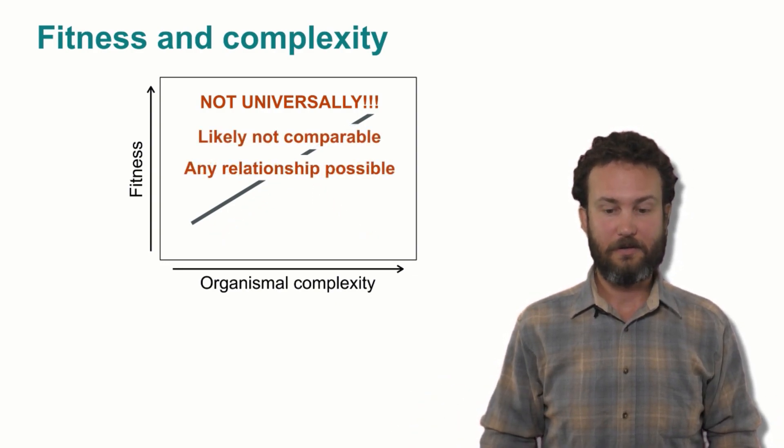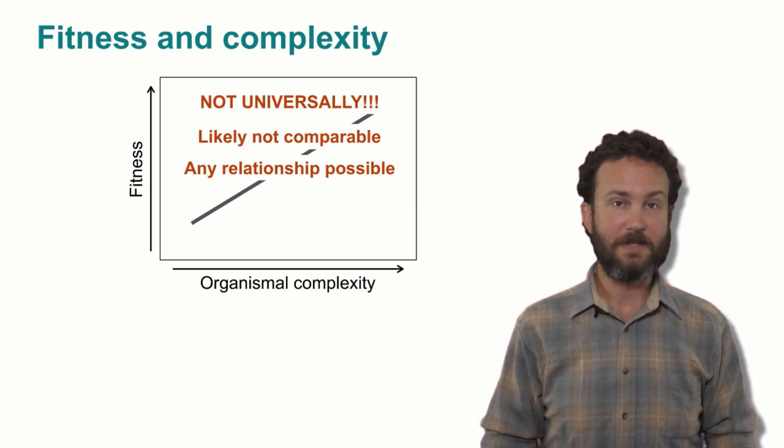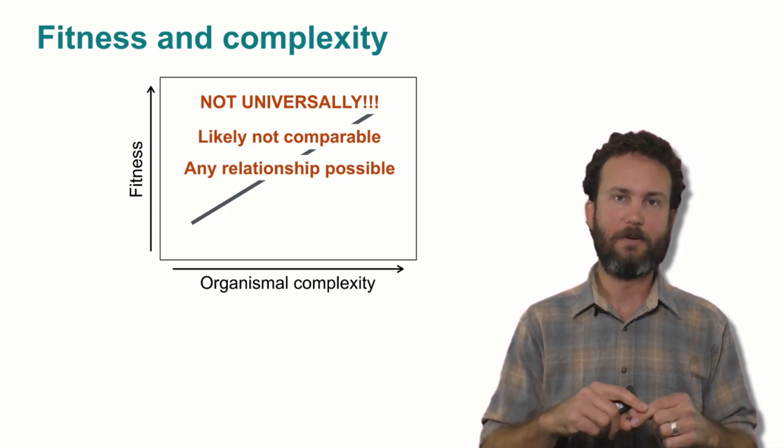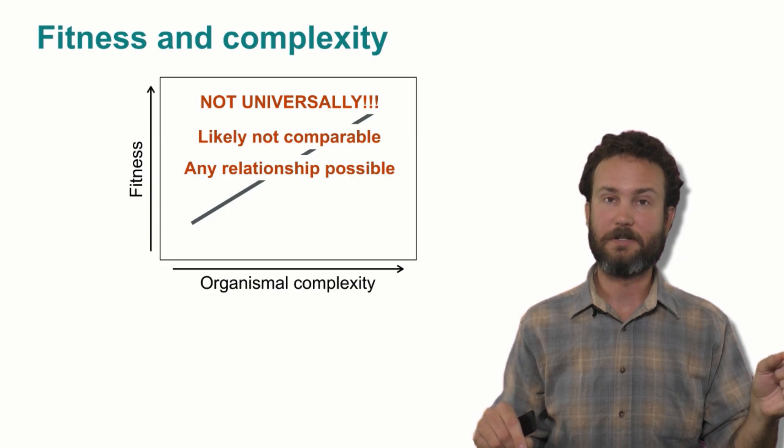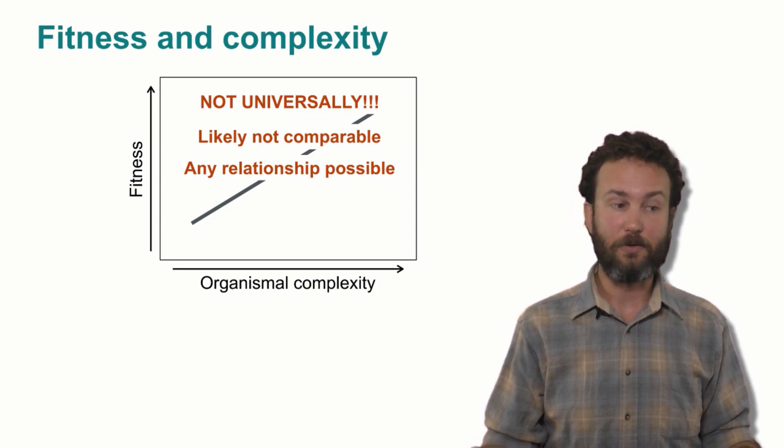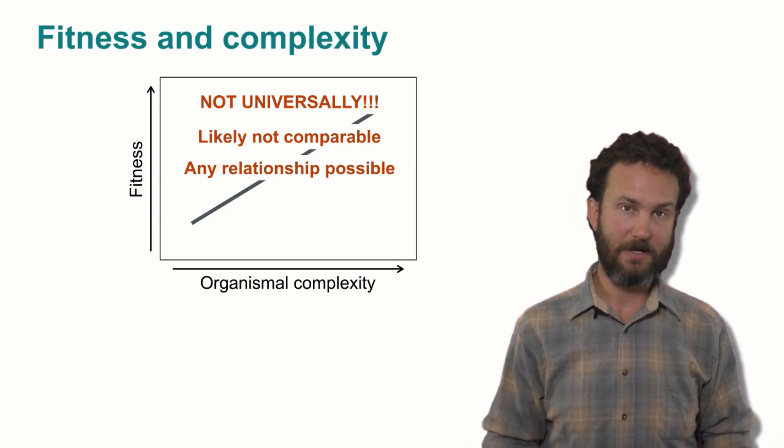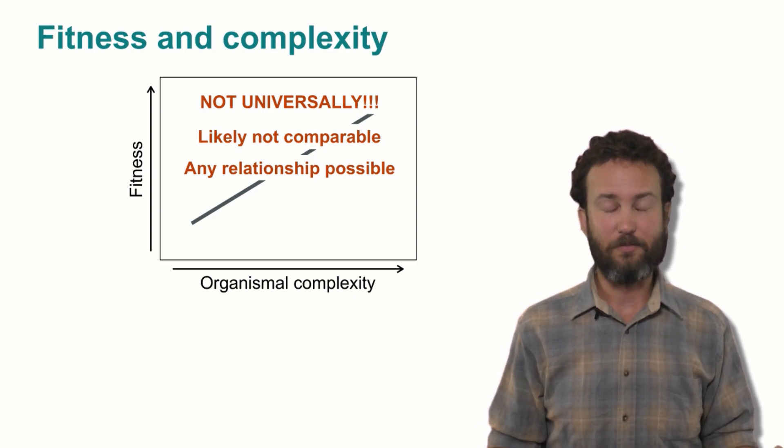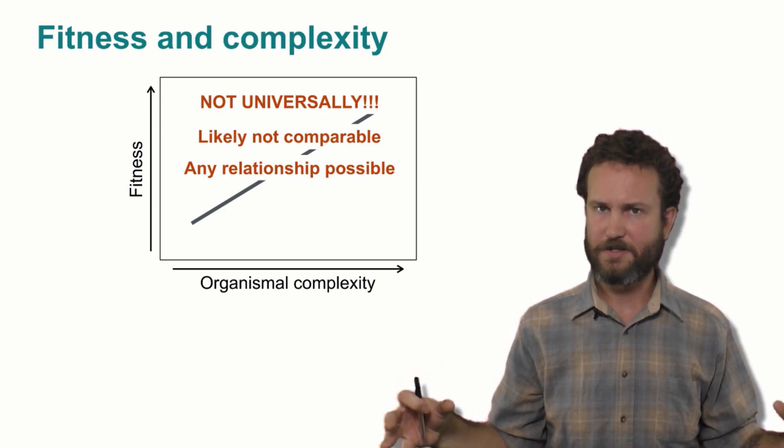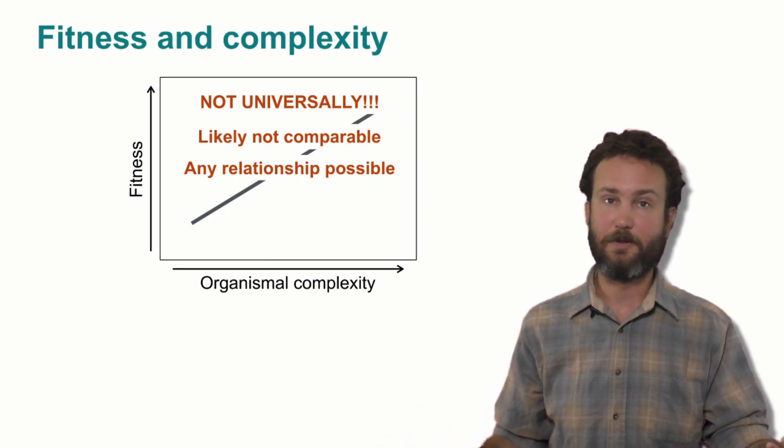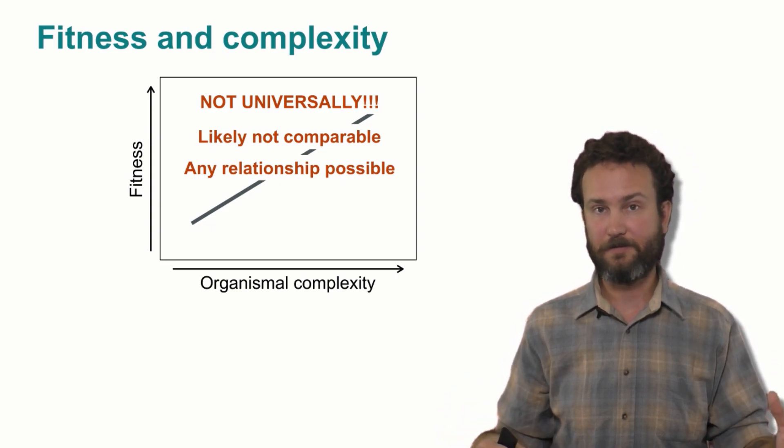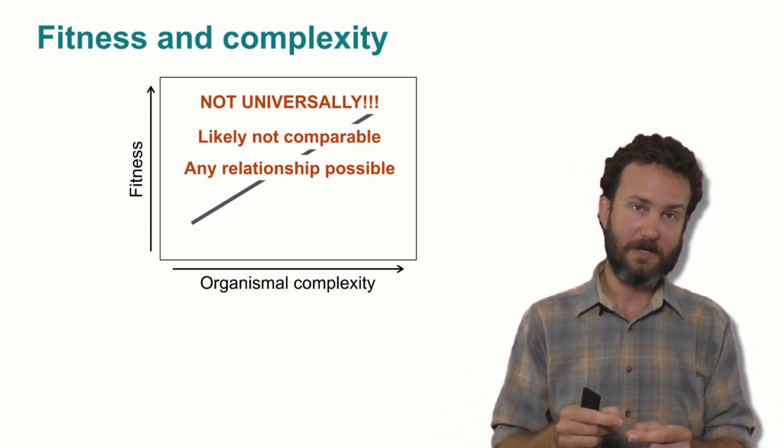The other important objection to this assumption is that a priori any relationship between complexity and fitness is possible: a positive relationship, a flat relationship, a negative relationship. So we can't assume that it's simply positive. But this does leave us with the open question of how did life become more complex? And the answer is unknown, but it likely consists of some amount of almost an entropic exploration of all the possible state space of being alive. Some of those states are more complex, some are less complex. And this exploration might happen through a combination of drift and in some cases a local selective advantage.